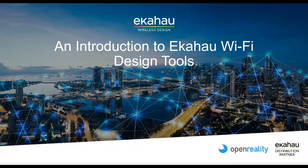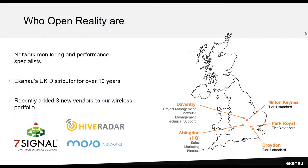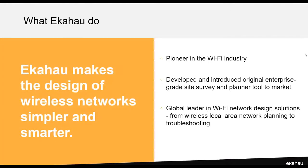First of all, I'd like to give a quick introduction to who OpenReality are. We've been network monitoring and performance specialists for almost 20 years, and for 10 of those we've been Ekahau's UK distributor. We've recently expanded our wireless portfolio, taking on three new vendors: Hive Radar for AP-on-a-stick survey kits, Mojo Networks (recently acquired by Arista) for access points, and Seven Signal for a Wi-Fi monitoring solution. I'd like to pass you over to Nick Turner, the technical lead for Ekahau in the UK and EMEA.